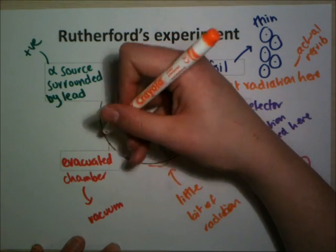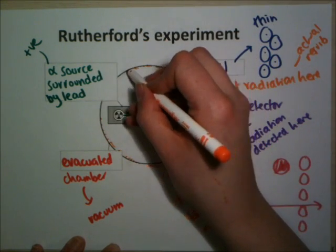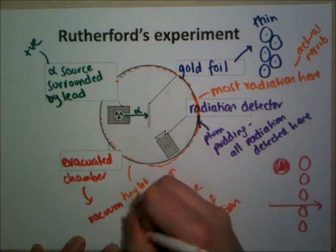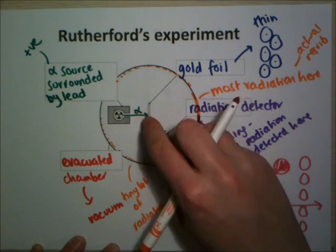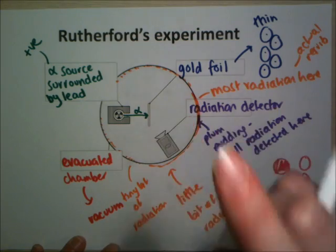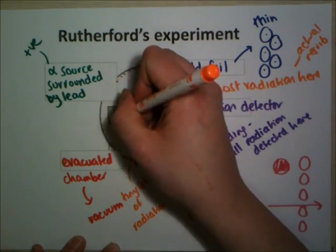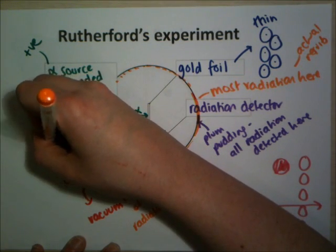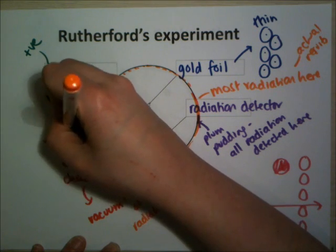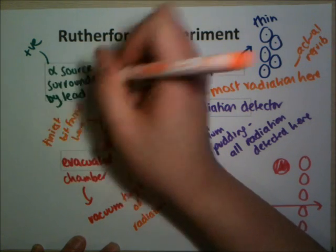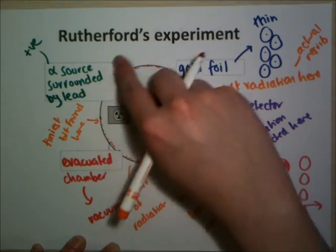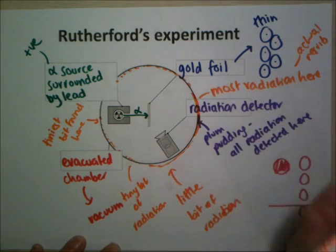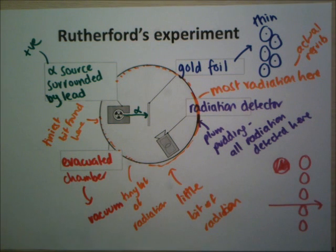As he moved the detector around past the gold foil, he found that a tiny bit of radiation was detected even at large angles from the beam direction. He was still getting radiation there - how did that happen when firing in that direction? And finally, even the tiniest amount was found going straight back. So he found that radiation was detected all the way around, with most found straight ahead but decreasing amounts going around the circle, which was not what the plum pudding model predicted.